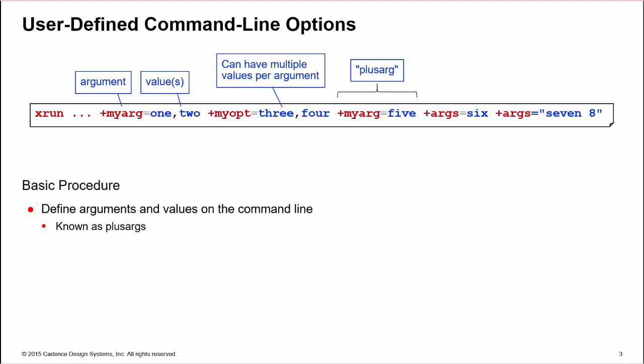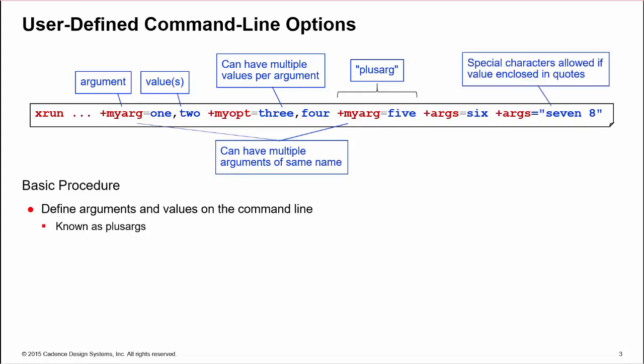The options can have multiple values per argument, multiple arguments of the same name in a single command line, and support values other than alphanumerics if the value is enclosed in double quotes.